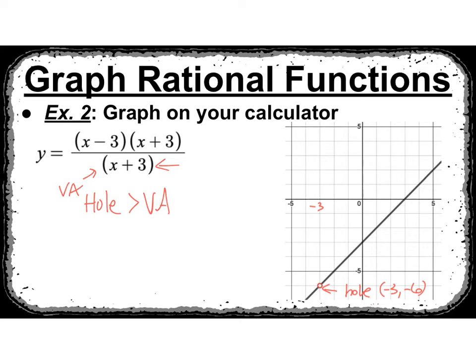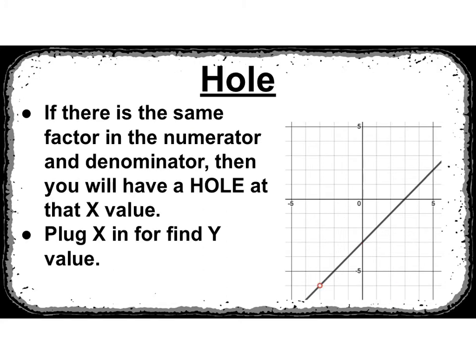When x is negative 3, we have a hole at negative 3, negative 6. You're not going to see that on Desmos unless you hover over — it will say undefined. On your graphing calculator it won't show either, but if you go to your table it will say error. We have the same factor in the denominator and numerator, so if I cancel those to simplify to 1, I really just end up graphing x minus 3, which is that line. It has a y-intercept of negative 3 and slope of 1, but x can't be negative 3. You will have a hole if there's the same factor in both numerator and denominator, at that x value — then plug x back in to get the y value.